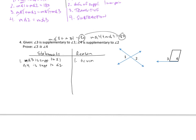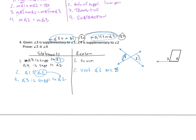Step two: angle one is congruent to angle two, because these are vertical angles — vertical angles are congruent. Step three: angle three is supplementary to angle two. It was supplementary to angle one, but angle one is congruent to angle two, so I substitute that in — and that's substitution. Step four: angle three is congruent to angle four, by the supplements theorem.